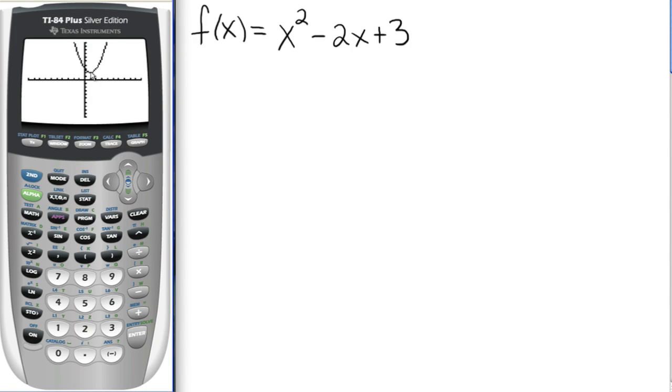So there's the parabola that we were expecting. So now we want to find this point right here, the vertex for this particular parabola, also called the minimum point. So this calc that's right above the trace button, that's what we need. So we hit second, calc, and we get this menu.